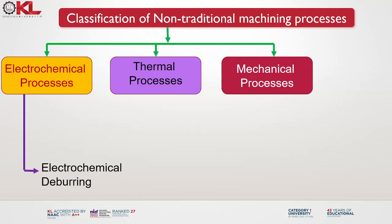Electrochemical deburring is commonly used in industries such as automotive, aerospace, medical devices and precision machining. The next classification is electrochemical grinding.